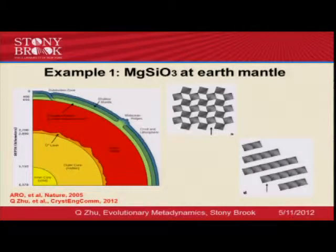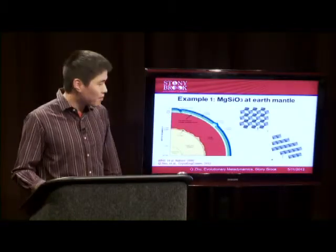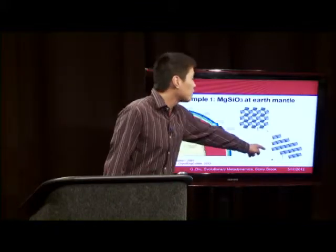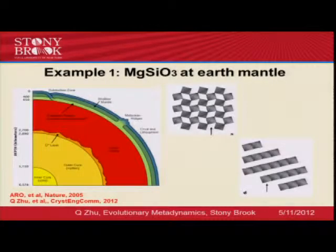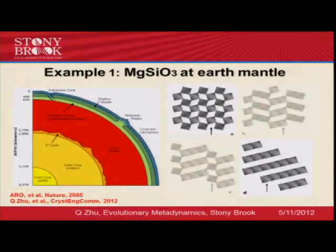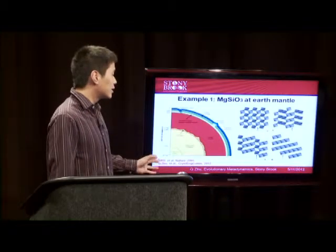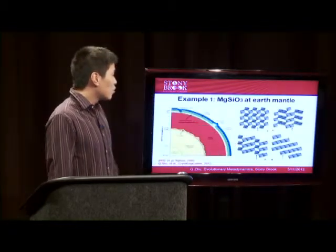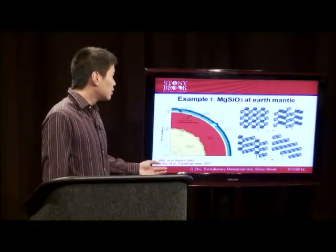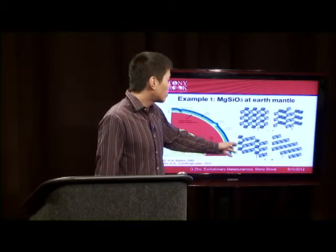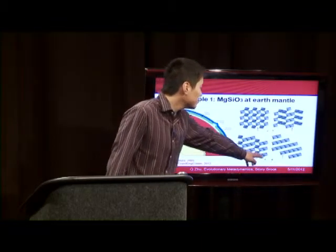It took a long time for people to figure out that this transition was from the perovskite structure to the post-perovskite structure. However, it was very hard to figure out how the transition happens. Using our method, starting from the perovskite structure and applying pressure, we indeed found the final product as the post-perovskite structure. We also found several interesting intermediate structures along the trajectory, allowing us to clearly establish that the transition mechanism proceeds by multiple steps of plane sliding.